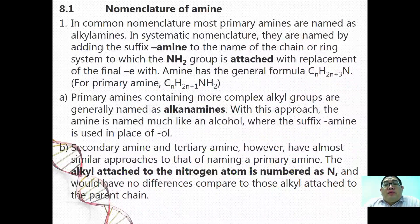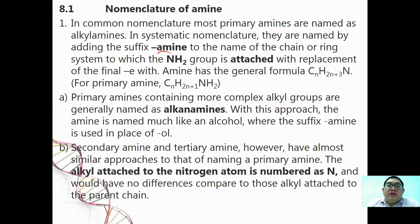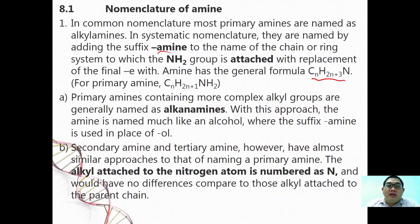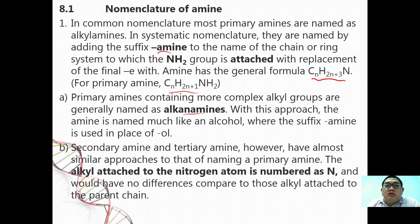In common nomenclature, most primary amines are named as alkyl amines. In systematic nomenclature, they are named by adding the suffix '-amine' to the name of the chain or ring system to which the NH₂ group is attached, with replacement of the final 'e' in the alkane name. With this approach, the amine is named much like an alcohol where the suffix '-amine' is used in place of '-ol'.